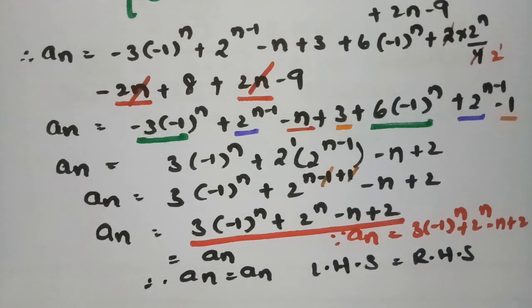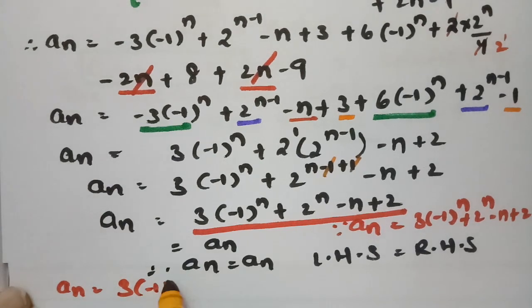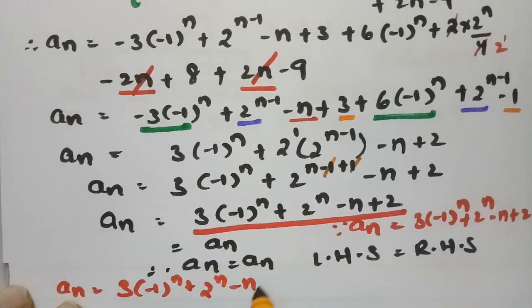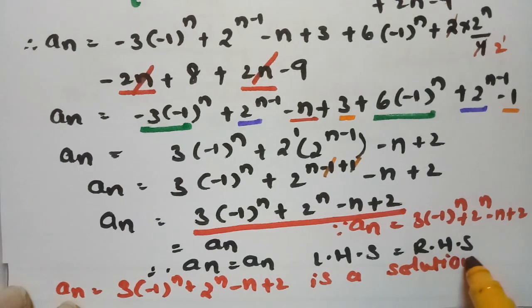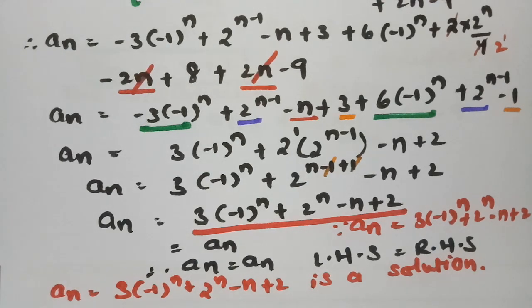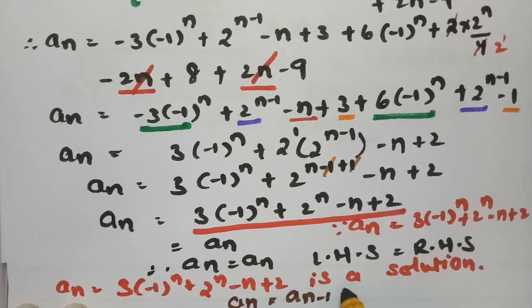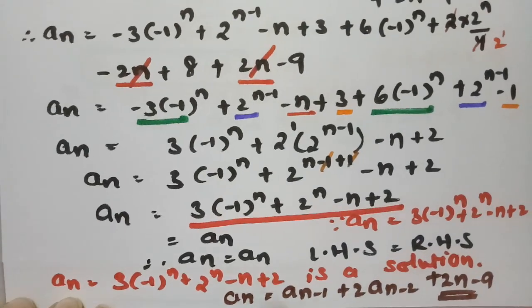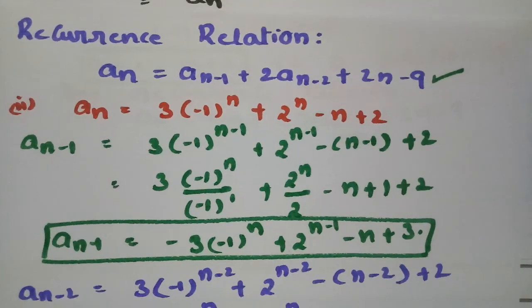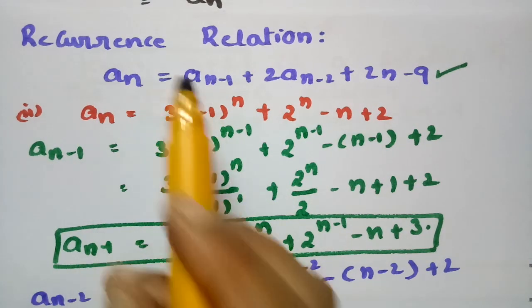Therefore, An = (-1)^n + 2^n - n + 2 is a solution for the recurrence relation An = An-1 + 2·An-2 + 2n - 9. We solved for An-1 and An-2, substituted into the recurrence relation, and after calculating and cancelling, we got the value as An.